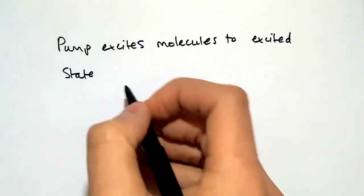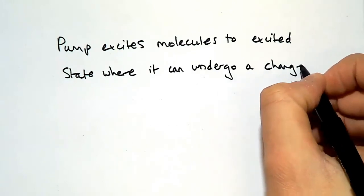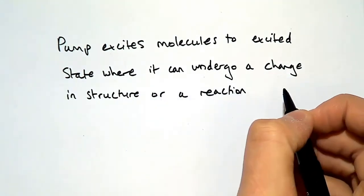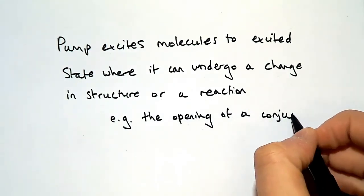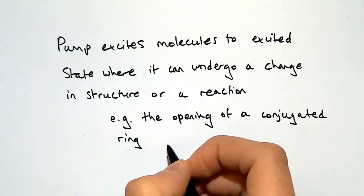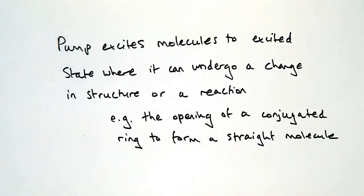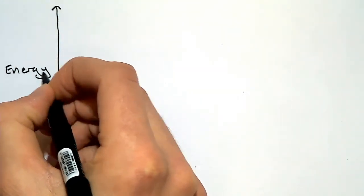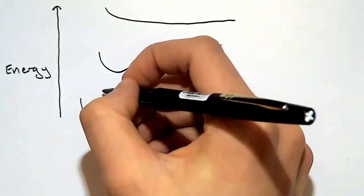The UV pump pulse excites molecules in the sample into the excited state. Molecules in the excited state can undergo a change in structure. For example, a ring opening can occur from a conjugated ring into a straight molecule. This diagram shows the route by which we excite the molecules. We start in the ground state and excite into the Franck-Condon region of the excited state.